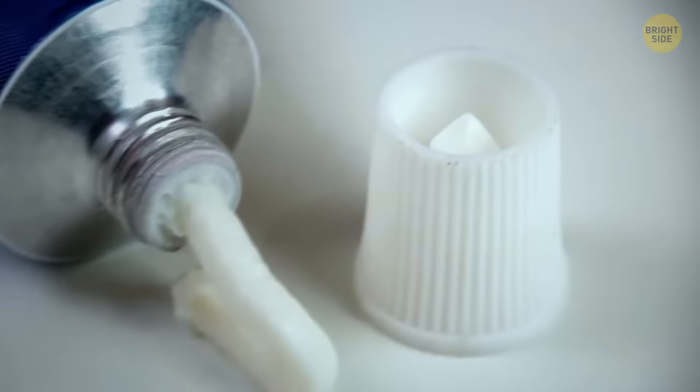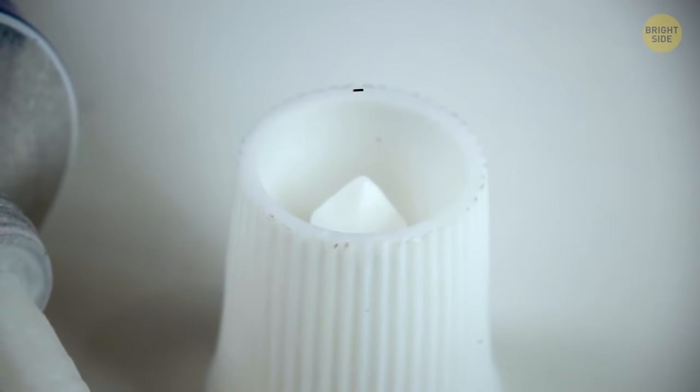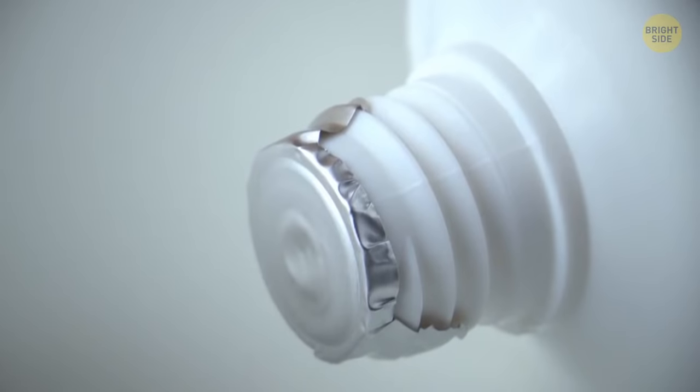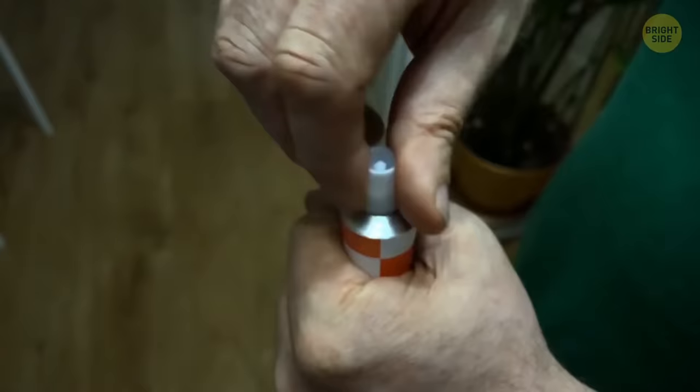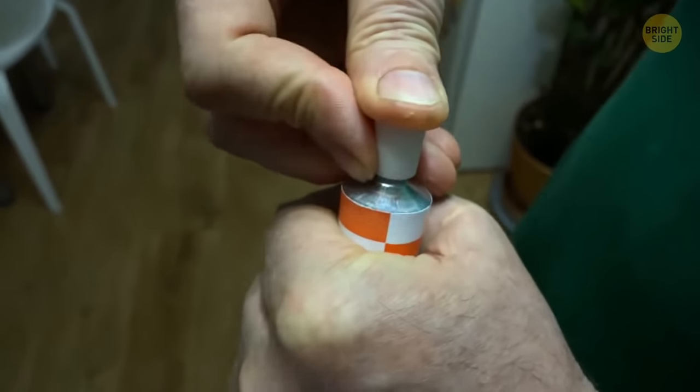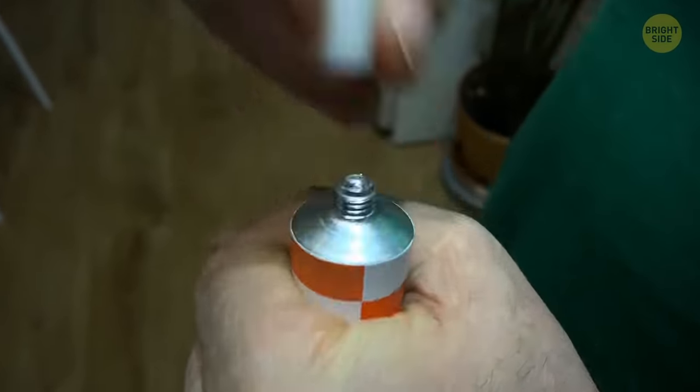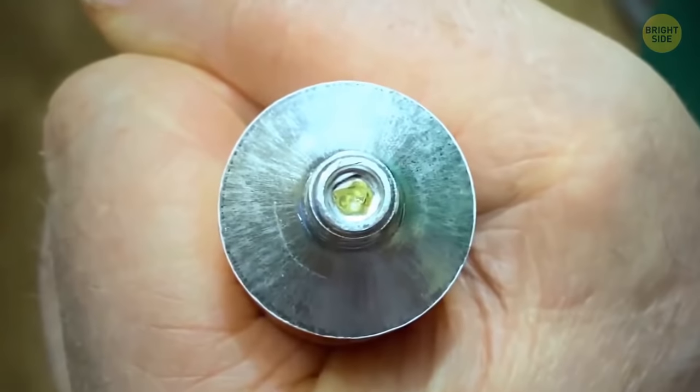Another thingy we often neglect is a point on an ointment cap. Most tubes are usually sealed with plastic film or foil, and opening it with your fingernails isn't the best idea. A point easily opens even the most safely sealed tube.